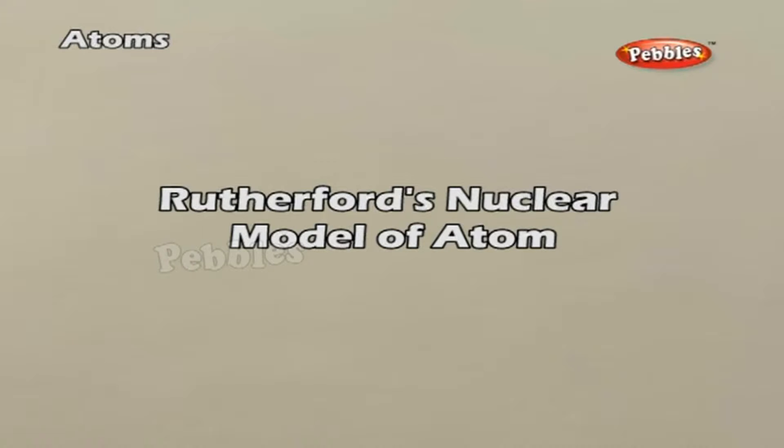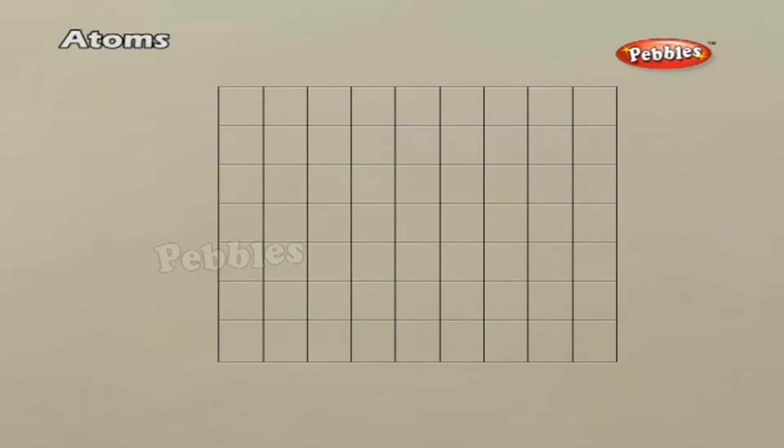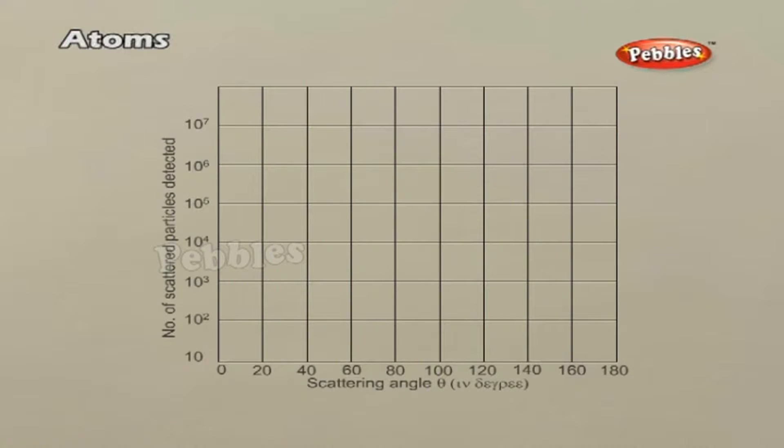Rutherford's nuclear model of atoms: A typical graph of the total number of alpha particles scattered at different angles in a given interval of time is shown in the figure. The dots represent the data points and the solid curve is the theoretical prediction based on the assumption that the target atom has a small dense positively charged nucleus.